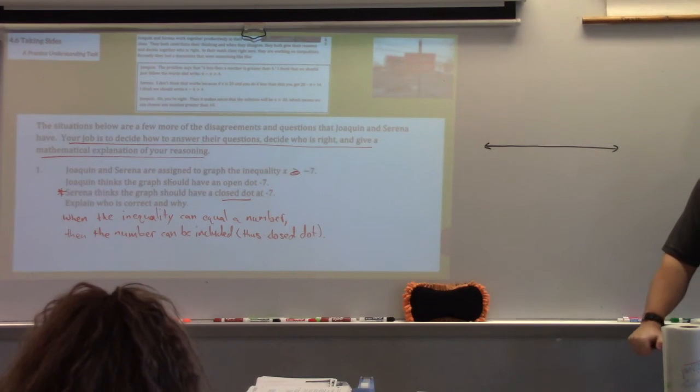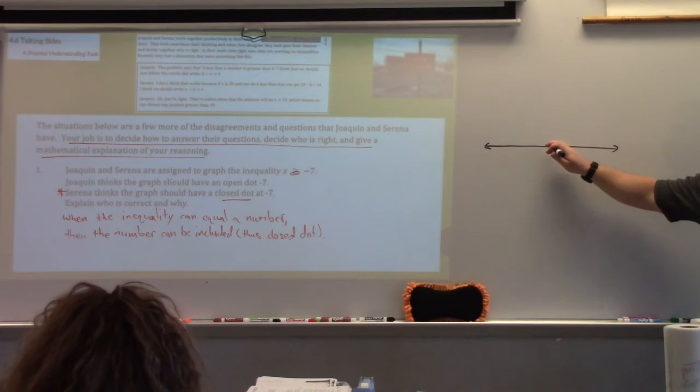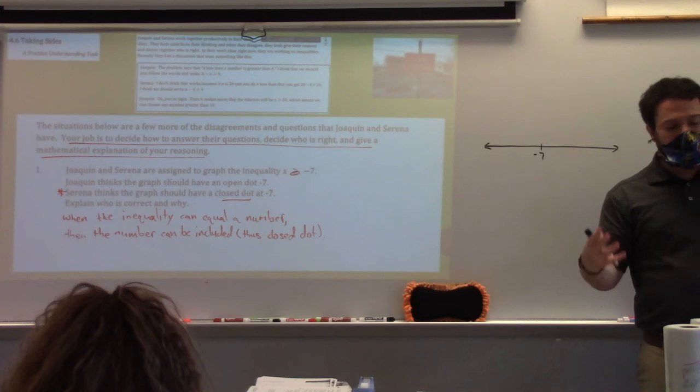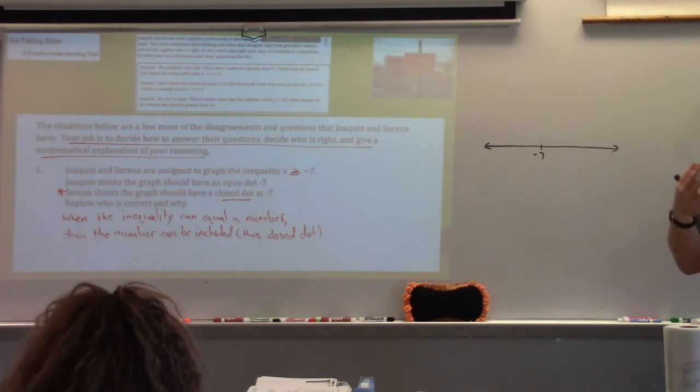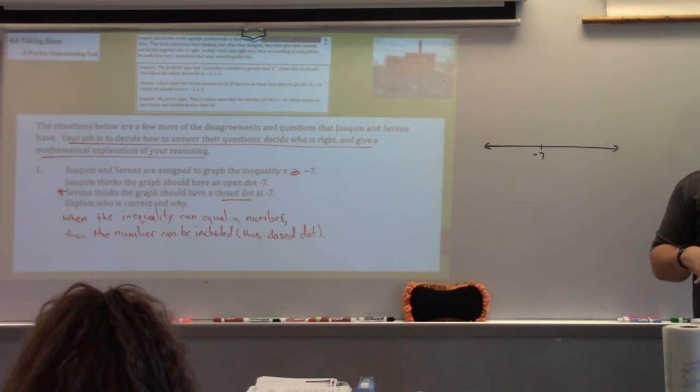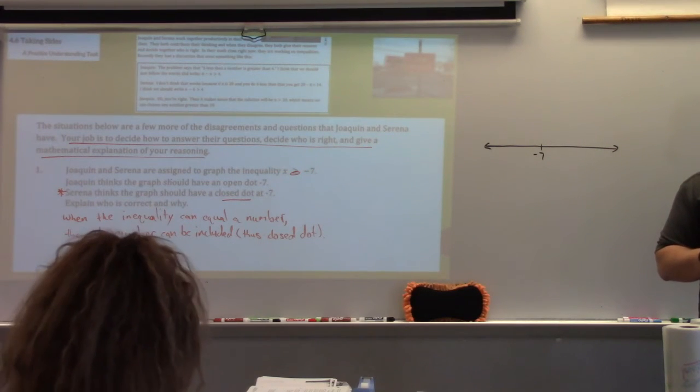They were assigned to graph this inequality. What number do I definitely need on this number line? Negative 7. We need to make sure we pay attention to the fact that it's a negative. Now, I will say, this is an important detail. We may want to include 0, because that will help us number the number line correctly. I need Emory Parker for checkout, please. She's on her way.